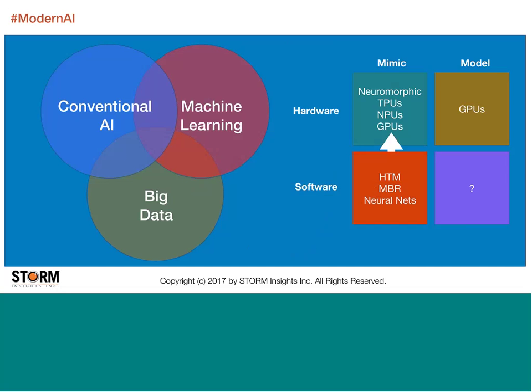AI today — the kinds of problems we can attack and the way we go after them — is fundamentally different from what we did 10 or 15 years ago. Even though we're still looking at reasoning and planning and problem solving, we're able to do it leveraging advances in big data and machine learning algorithms. What I wanted to do is look at the state today of mimicking and modeling and hardware versus software once you put all these together.